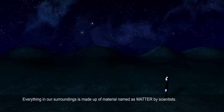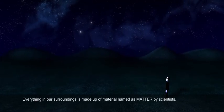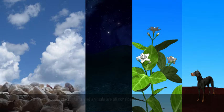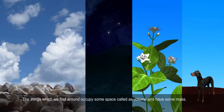Everything in our surroundings is made up of material named as matter by scientists. Even stones, clouds, stars, plants and animals are all considered as matter. The things which we find around occupy some space called as volume and have some mass.